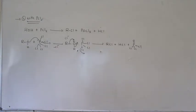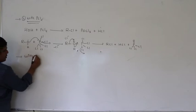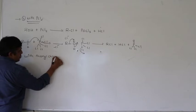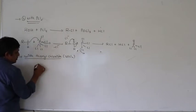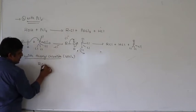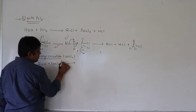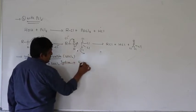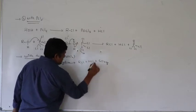Next: reaction with thionyl chloride, SOCl2. Alcohol reacts with thionyl chloride, sometimes in the presence of pyridine — a mild base — giving RCl, HCl, and SO2.